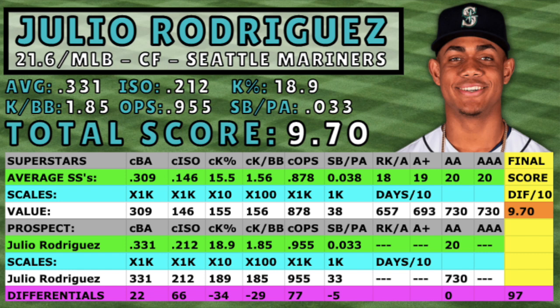This may get a bit complicated, but just follow the color scheme as I explain. The gray bar shows the different stats I used to compile my data. The green bar shows the superstars and prospects' career average of each stat. The blue bar shows how I scaled each stat to create a value for the superstars and each prospect. Finally, the purple bar represents the difference between each spot, good or bad.